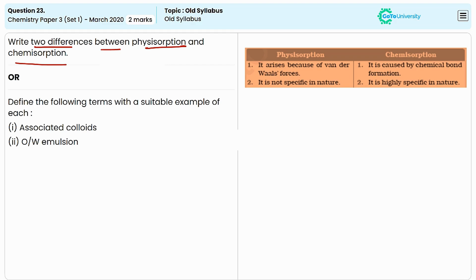In physisorption, it involves weak Van der Waals forces or London dispersion forces between the adsorbate and the surface. In terms of bonding, these are physical non-covalent interactions, which are relatively weak with a low heat of adsorption less than 40 kJ per mole.